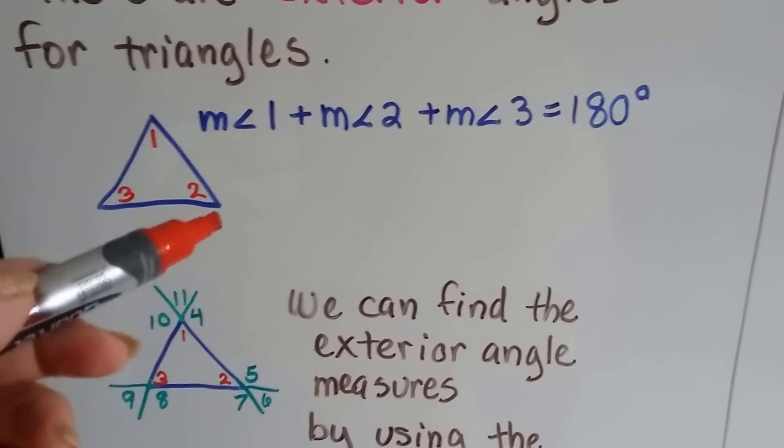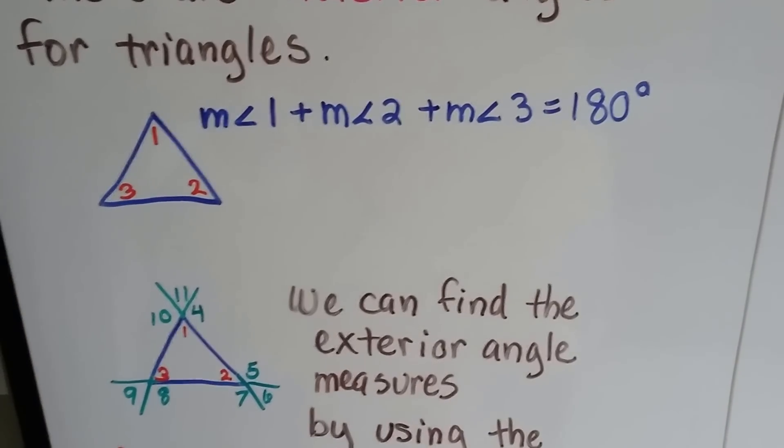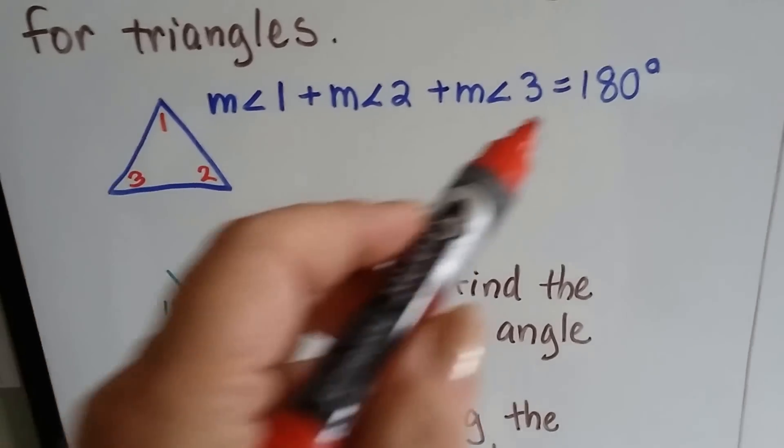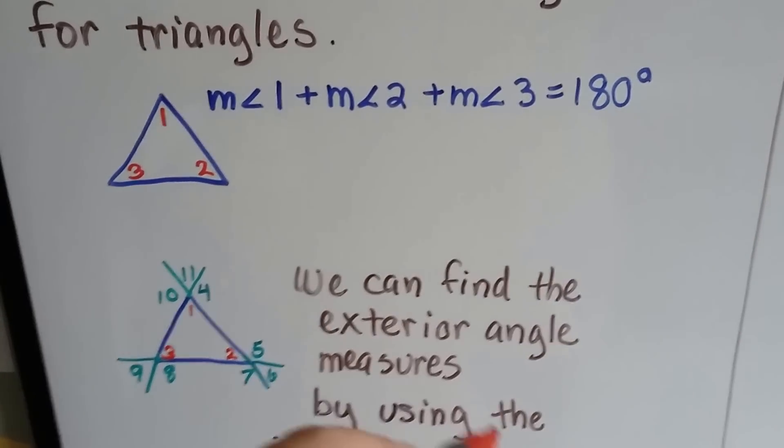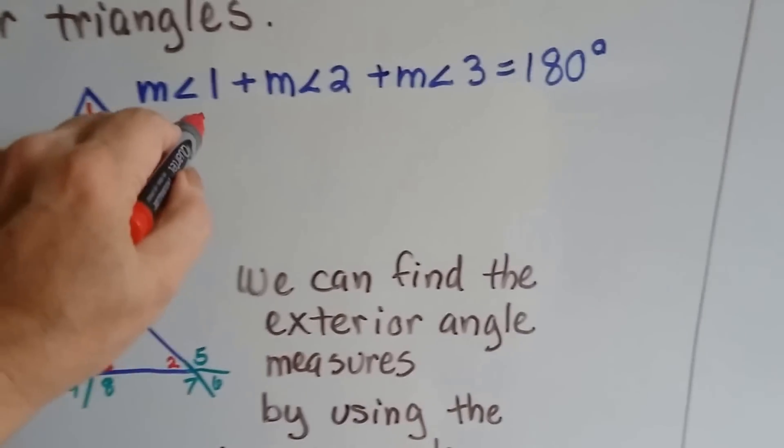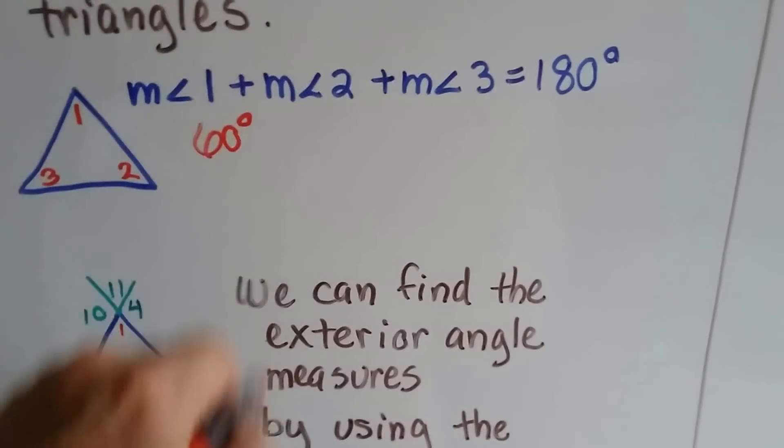You remember equilateral, all the sides are equal, all the interior measures are equal, then we know that they all are the same measure but total 180 degrees. 180 divided by 3 would be 60, so we know every single angle would be 60 degrees in an equilateral, wouldn't it?